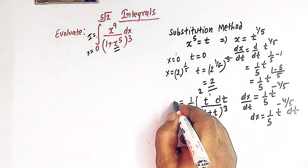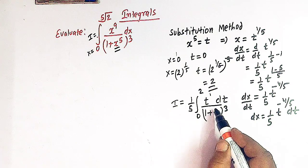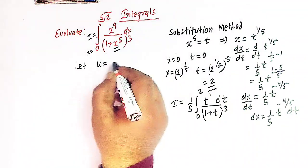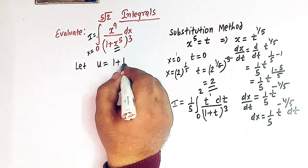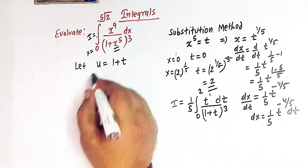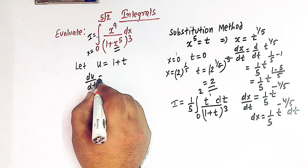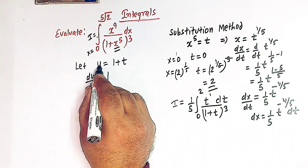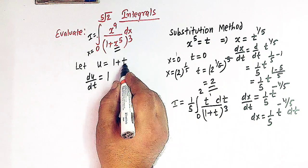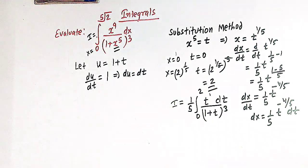Now here we can make another substitution. Let u equal 1 plus t, introducing a new variable u. Then du over dt is simply 1, because the derivative of 1 is 0 and the derivative of t is 1. So from here we have du equal to dt.